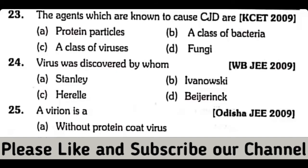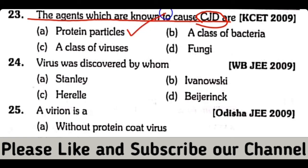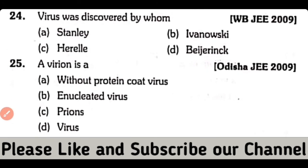Question number 23. The agents which cause C.J.D. — Creutzfeldt-Jakob disease — it is caused by protein particles, a class of bacteria, a class of viruses, or fungi. So the correct answer is option A. Protein particles known as prions cause Creutzfeldt-Jakob disease.